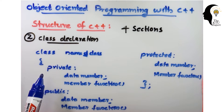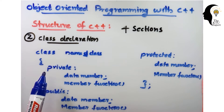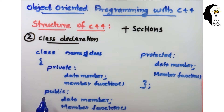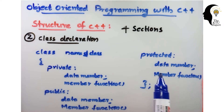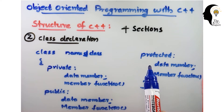Private members cannot be accessed from outside the class — by default, members are private. Public members are accessible from outside the class. Protected members cannot be accessed from outside the class; however, they can be accessed in inherited classes.